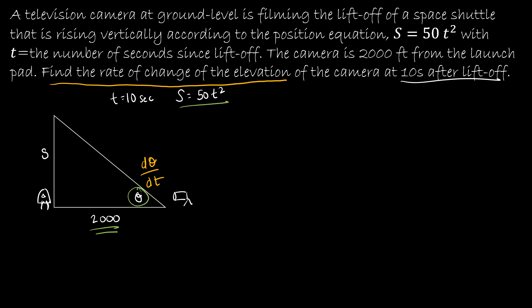At the moment of 10 seconds after liftoff, why is this harder? Because I can't use the Pythagorean theorem to solve. I'm going to relate this angle to the side opposite and side adjacent using the tangent function. So tan(θ) = 50t²/2000. Now let's find the derivative: sec²(θ)·dθ/dt = (1/2000)·100t.